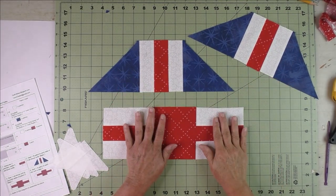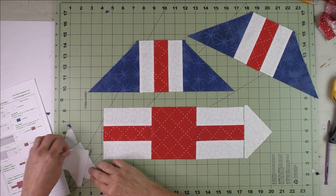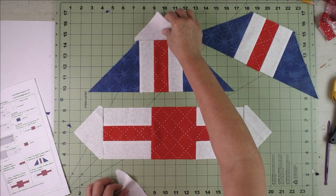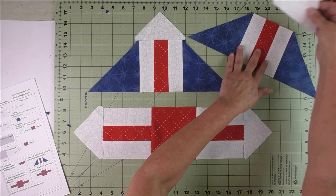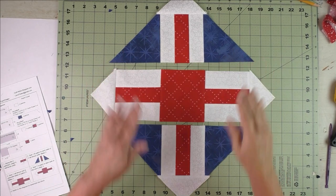Now we have these three big units done. We're going to take Patch A, stitch one to either side of the little rail fence, and stitch one to the top of this one. Now piece these units together and your block will be finished.